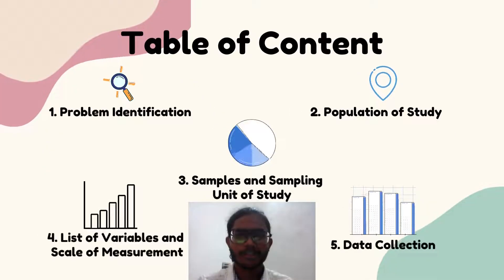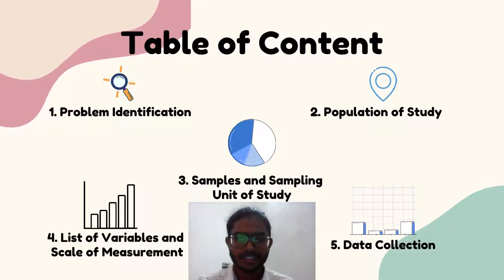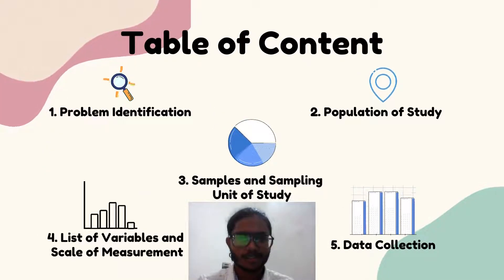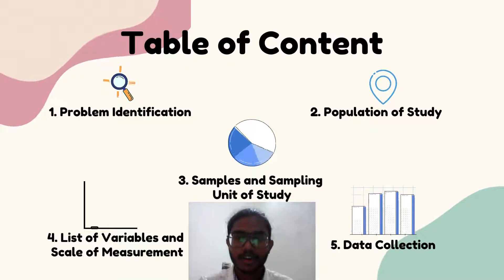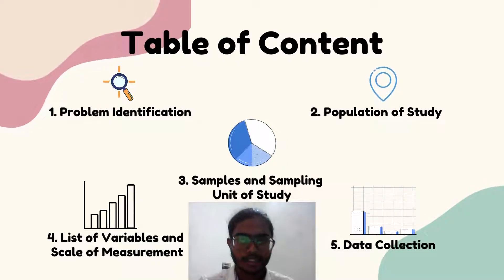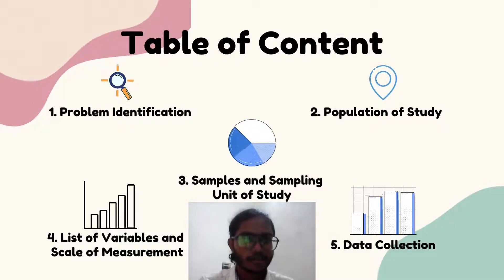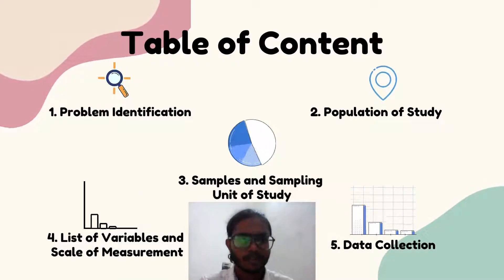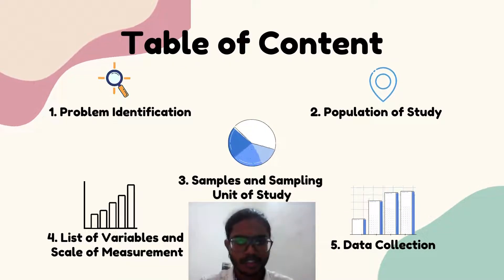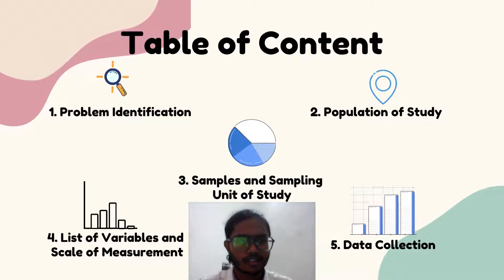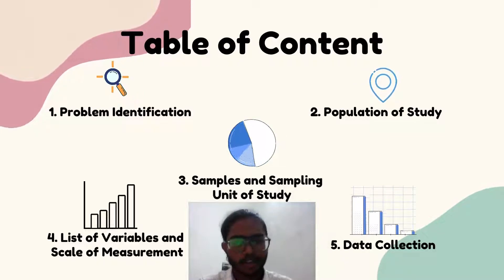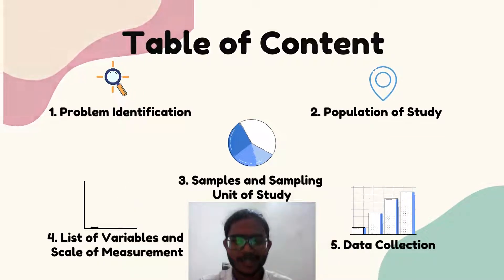Now we will talk about the table of contents, which includes problem identification, population of study, sample and sampling unit of study, list of variables and scale of measurement, and also data collection.